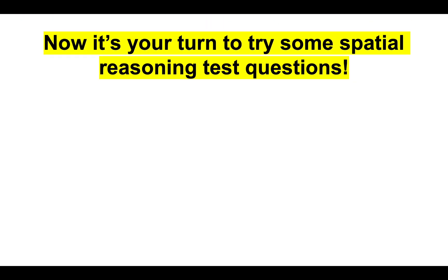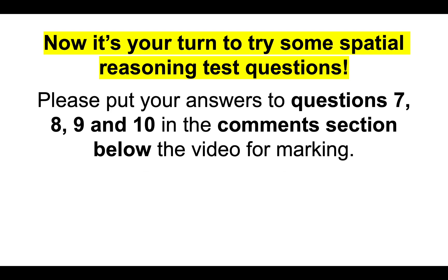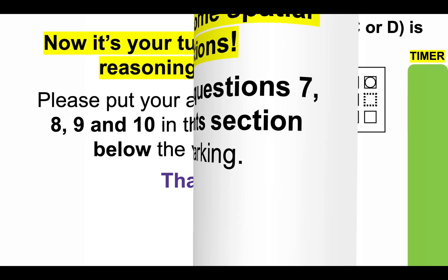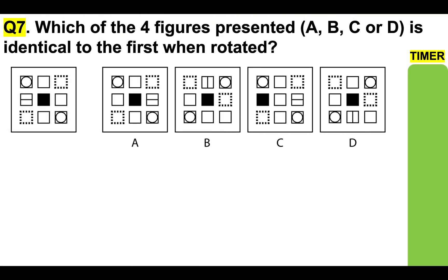Now it's your turn to try some of these spatial reasoning test questions. Please put your answers to questions 7, 8, 9, and 10 in the comments section below the video for marking. Same routine — we have the timer on the right-hand side. Question 7: which of the four figures — A, B, C, or D — is identical to that first one on the left when rotated? Here's the timer.